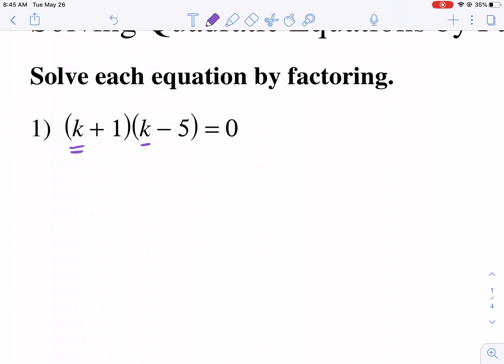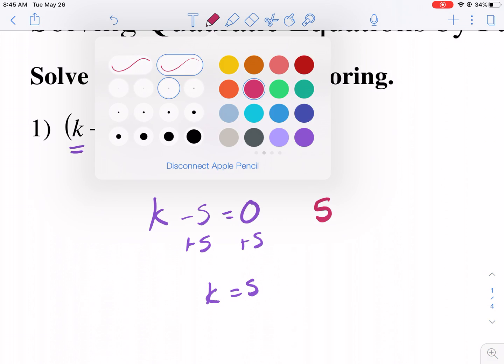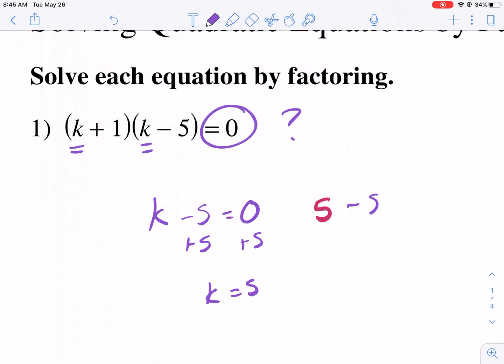Now, what values of k will make this true? Well, if we had just k minus 5, we could easily solve for k. We would add 5 to both sides, and we say that k equals 5. So if we plugged in 5 for k, we would see that it makes a true statement. 5 minus 5 is, in fact, zero.